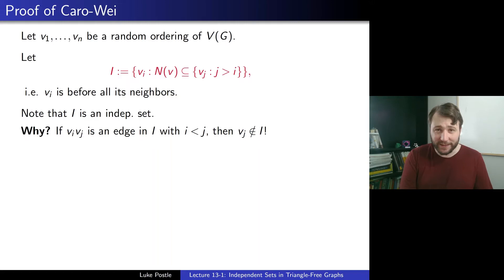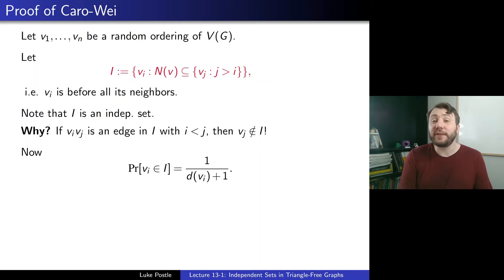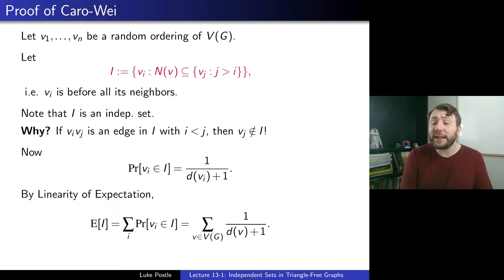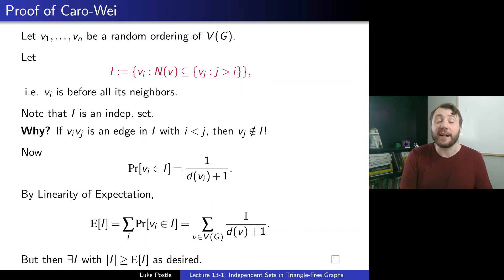What is the expected size of I? The probability that vertex vi is in I is 1 over (d(vi) plus 1). Why? Among vi and its neighbors, there are d(vi) plus 1 vertices, and there's a 1/(d(vi)+1) chance that vi is first among them. By linearity of expectation, the expected size of I is the sum of 1/(d(v)+1). There exists an I at least as large as the expectation, and that's an independent set of the required size.